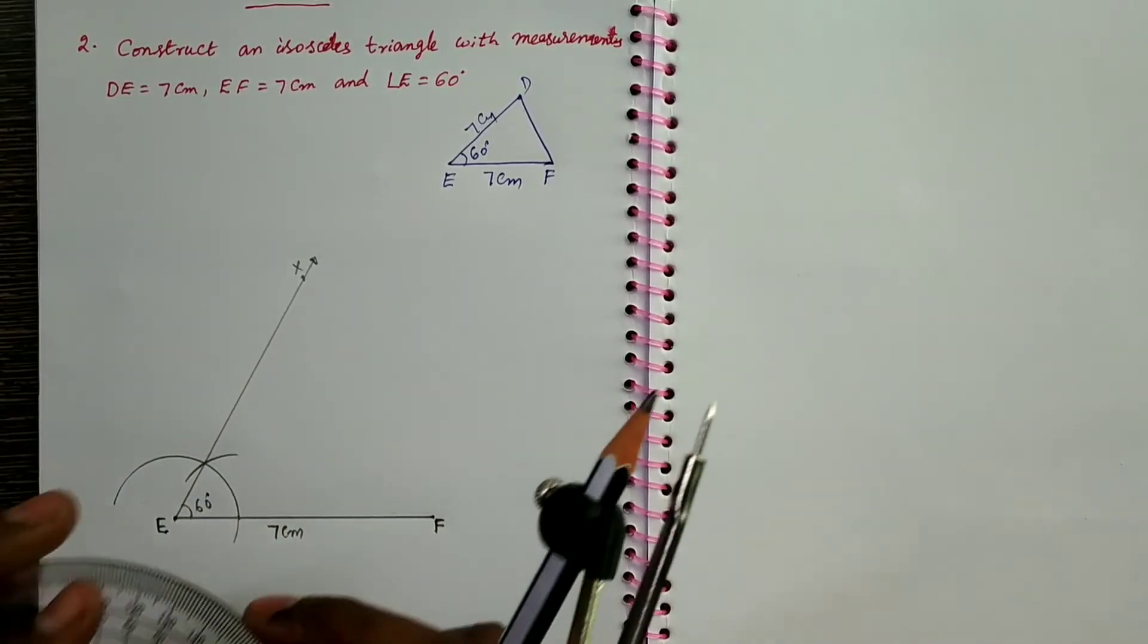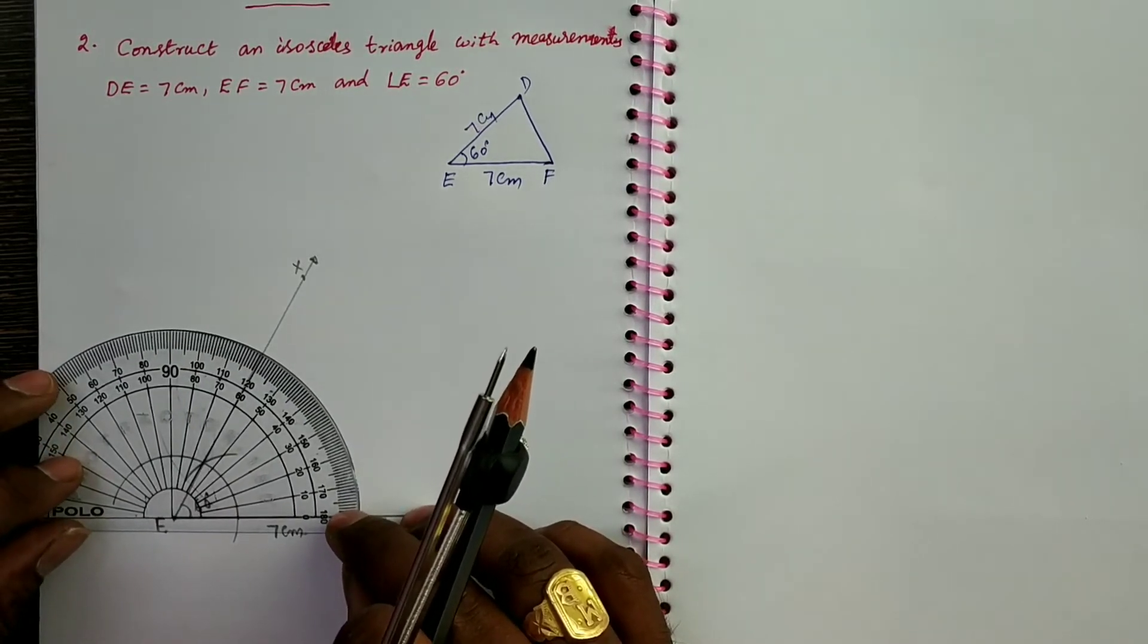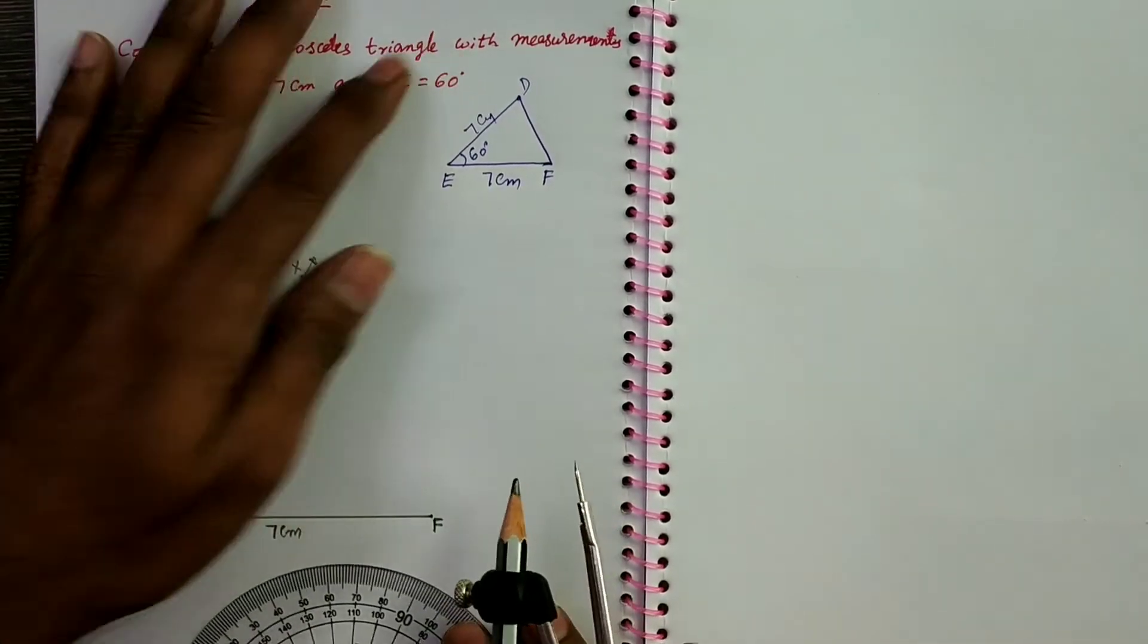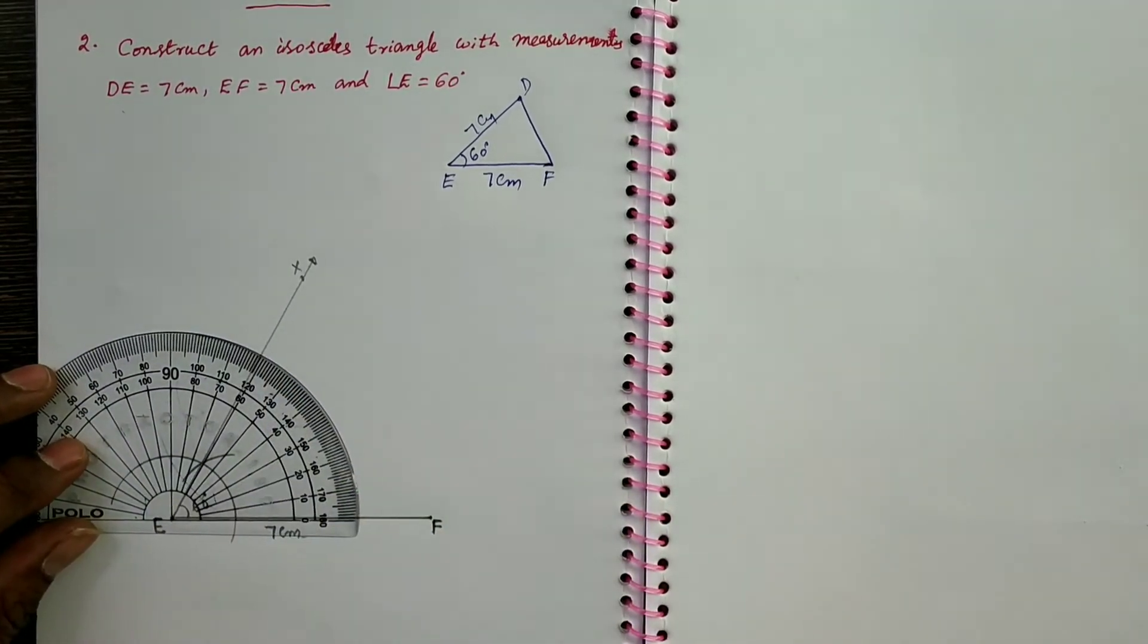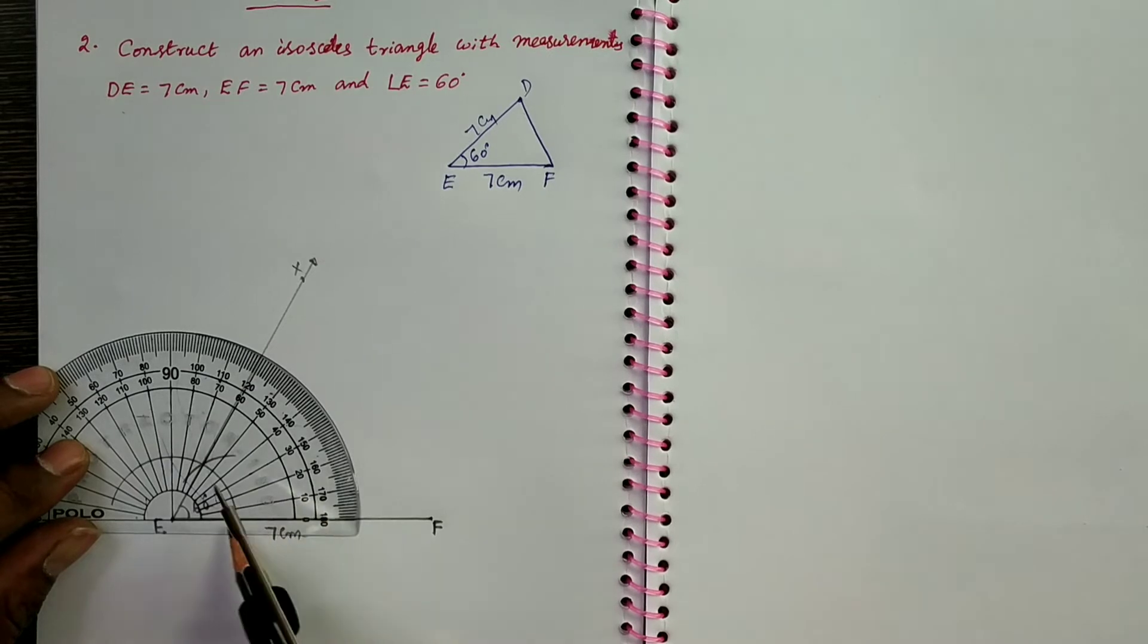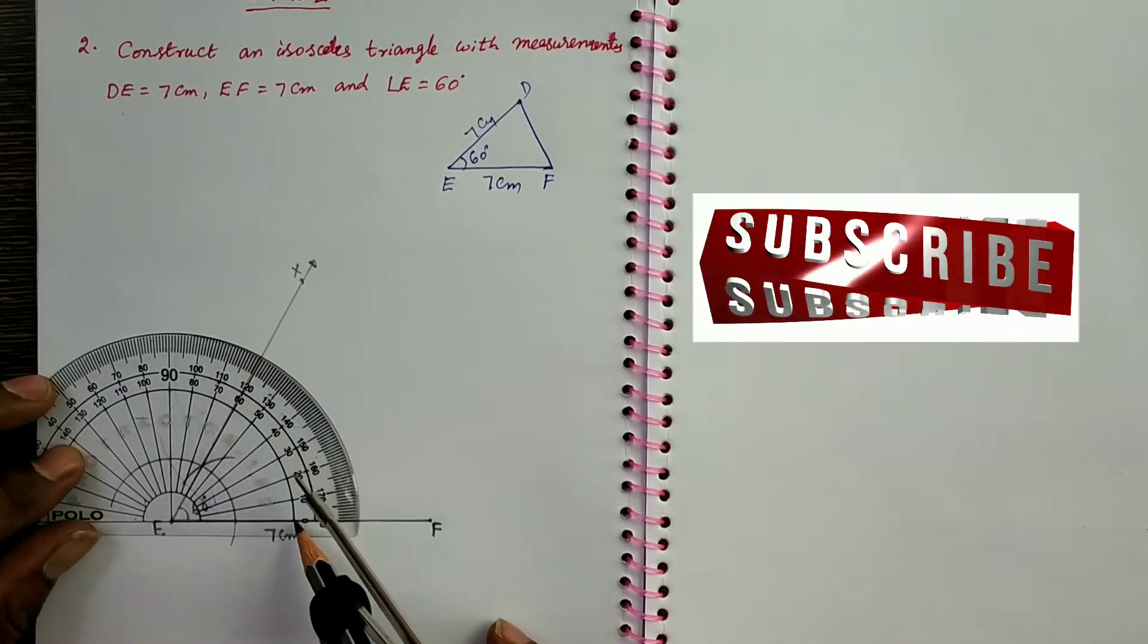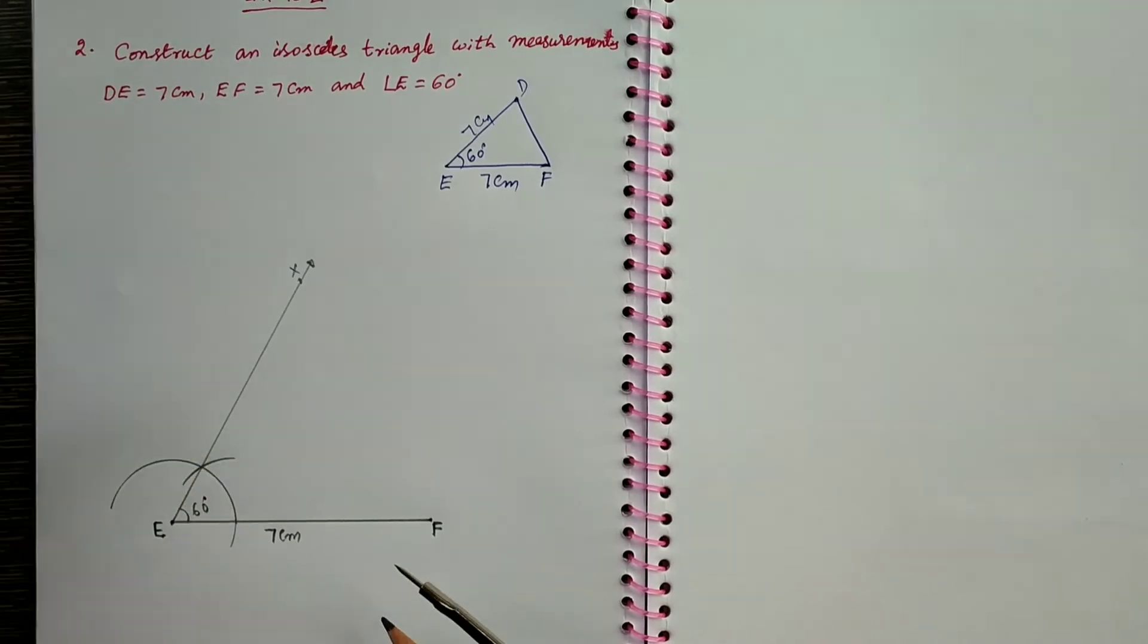So now you have to check by using protractor. See this is exactly 60 degrees. Otherwise if there is no line you can take by protractor also. Keep protractor like this and at 60 degrees. So this line based on angle is there. Zero is down there. So from zero to 60 you can check like this. So at 60 degrees you keep a point and draw a ray. This is the way by using protractor.